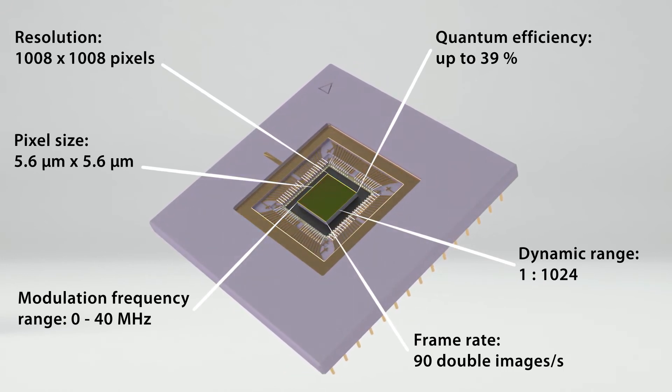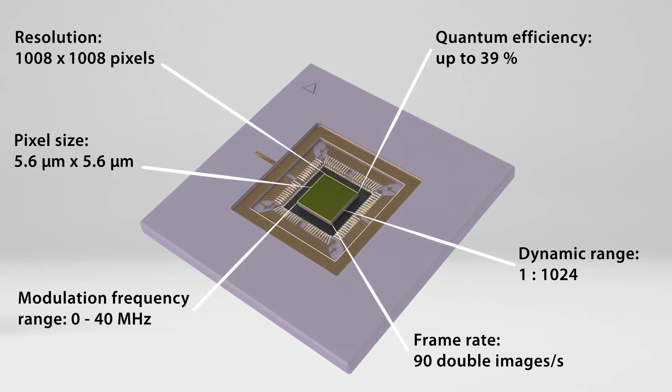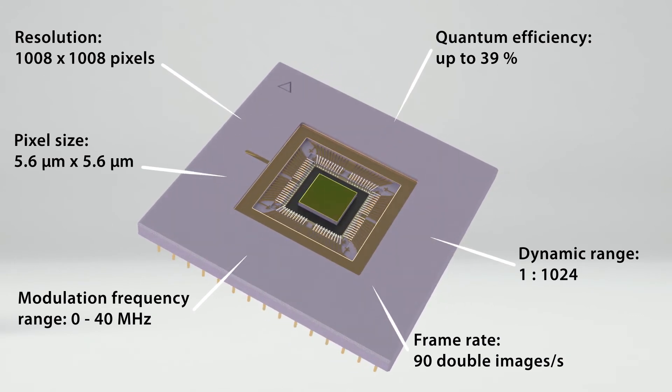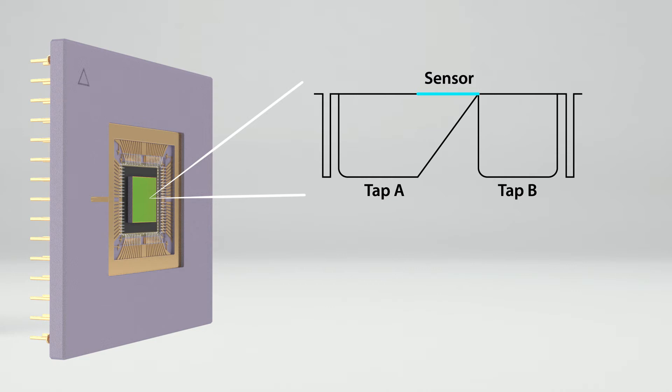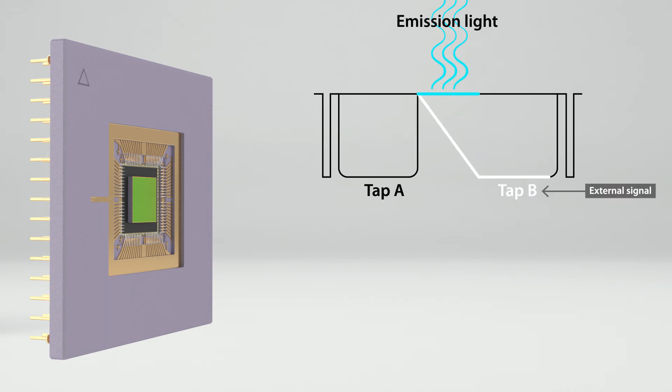It was developed by CSAM and PCO from 2007 to 2012. In this unique image sensor, each of the 1008x1008 pixels has two charge collection areas, tap A and tap B. An externally applied two-level modulation signal controls whether the generated charge carriers pass through tap A or tap B.